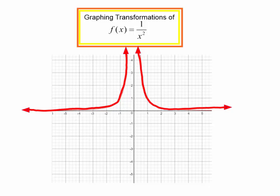In this video we are going to talk about the graph of f(x) = 1 over x squared. In another video we talked about 1 over x. What is the difference between 1 over x and 1 over x squared?